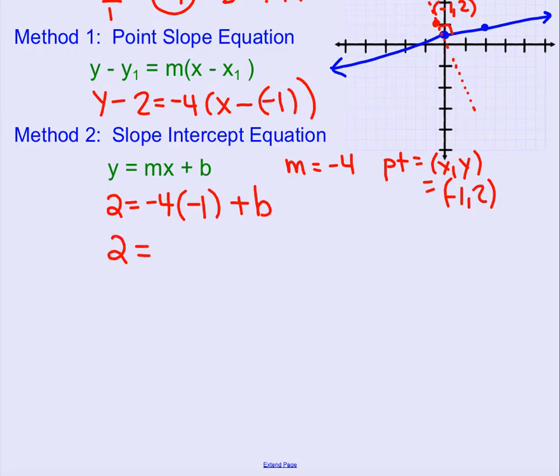So 2 stays, negative 4 times negative 1 is positive 4, and then plus b. Now we're going to subtract 4 from both sides, so 2 minus 4 equals b, then simplify. 2 minus 4 is negative 2.